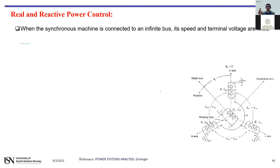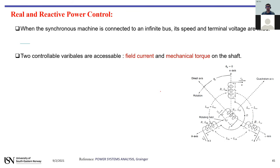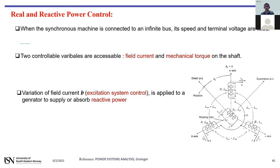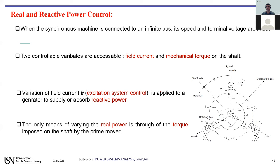Two variables are accessible to us: the field current, which we can change with an external DC source, and the mechanical torque driven by the prime mover. The excitation system control, which changes the field current, is used for reactive power control. On the other hand, if we change the mechanical torque, we can control active power.